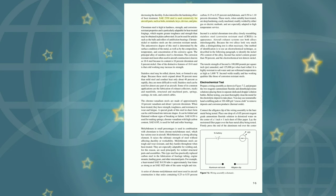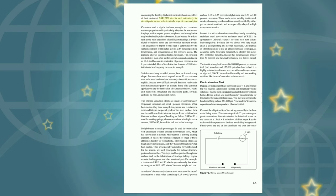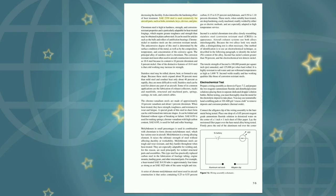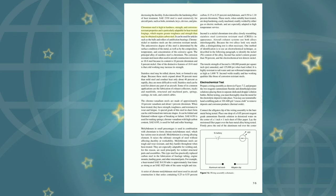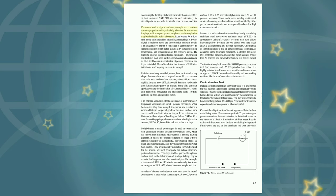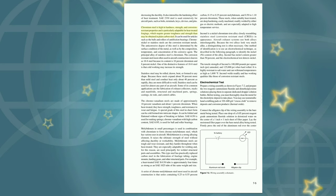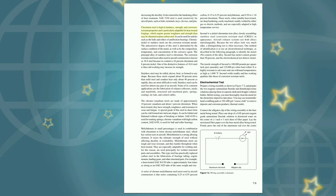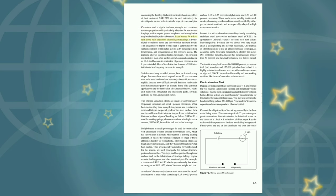C-2330 steel is used extensively for aircraft parts such as bolts, terminals, keys, clevis pins, and pins. Chromium steel is high in hardness, strength, and corrosion-resistant properties and is particularly adaptable for heat-treated forgings that require greater toughness and strength than may be obtained in plain carbon steel. It can be used for articles such as the balls and rollers of antifriction bearings.